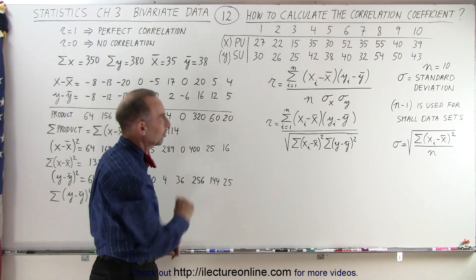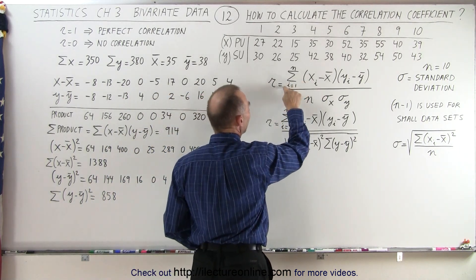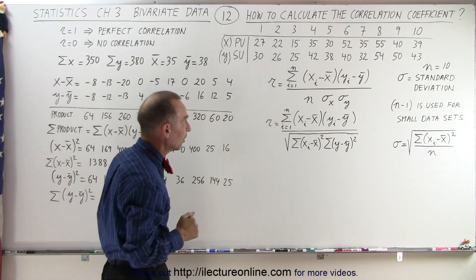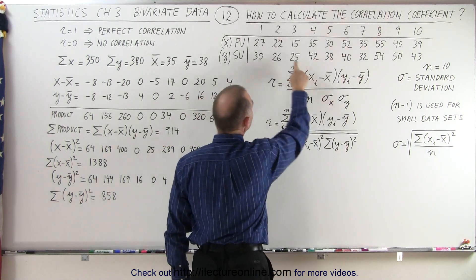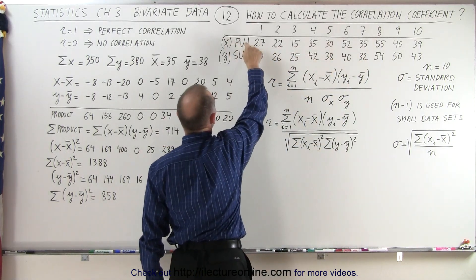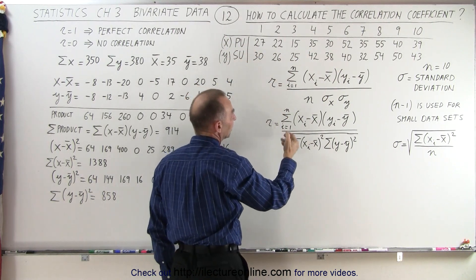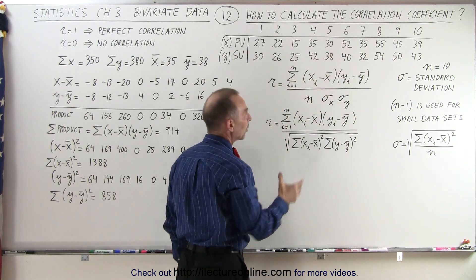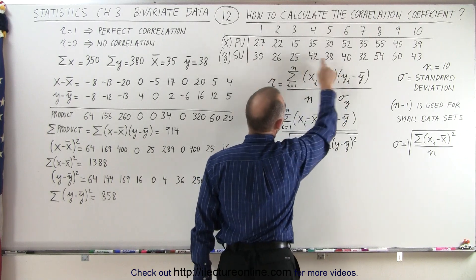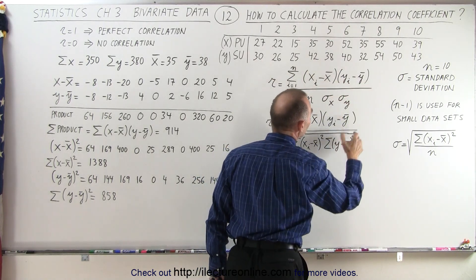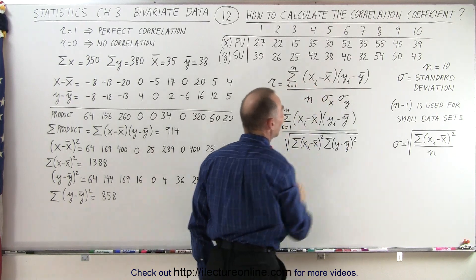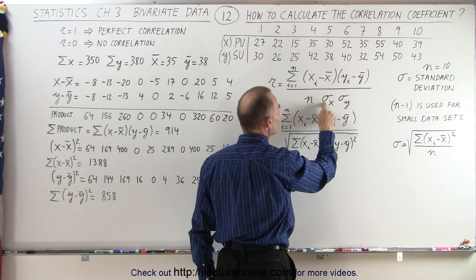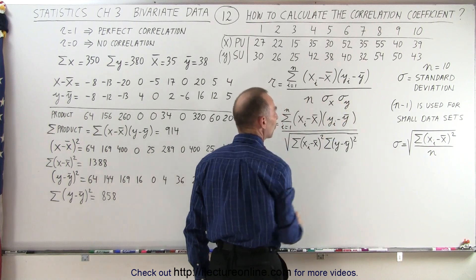How do we interpret this equation? In the numerator, we have a summation from i equals 1 to n, where n represents the number of data points — there are 10 students each with push-ups and sit-ups data. We take the difference between each x data point and the mean, multiply that by each y data point minus the mean of y, then multiply those out and sum up those 10 multiplications. In the denominator, it's n times the standard deviation of x times the standard deviation of y.